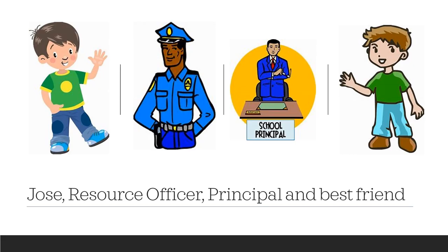I'm going to read a role play of the real life consequences of Jose's choice. Characters include Jose, a resource officer, a principal, and Jose's best friend. Resource officer: 'Stop right there — cheating is against school rules.' Jose: 'But I didn't do anything, this isn't mine, I didn't steal the answer sheet.' Resource officer: 'You are holding and looking at the answers.' Jose: 'But they just handed it to me, I didn't even think about what I was doing.' Resource officer: 'You should have thought as soon as your peers started talking about cheating. Come on, let's go.'